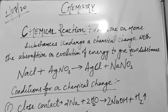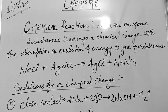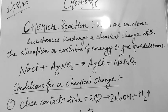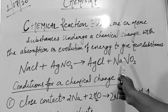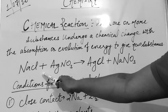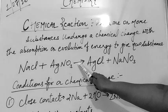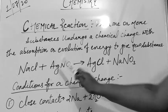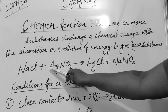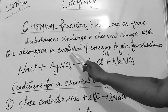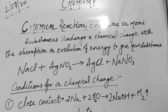So what is a chemical reaction? When one or more substances undergo a chemical change with the absorption or evolution of energy to give new substances. Means whenever we take two or more reactants, some changes has taken place in these compounds, that is called a chemical reaction.